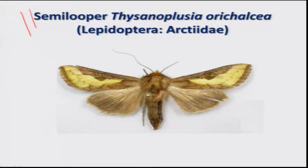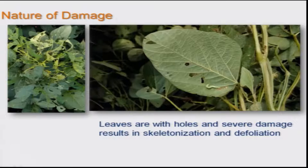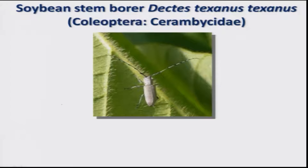Next is the Semilooper, Thysanoplusia orichalcia, which is a sporadic pest on soybean. The caterpillar is the damaging stage. In the early stage it makes holes on the leaf; later it skeletonizes the whole plant and defoliation is normally seen on the soybean crop.